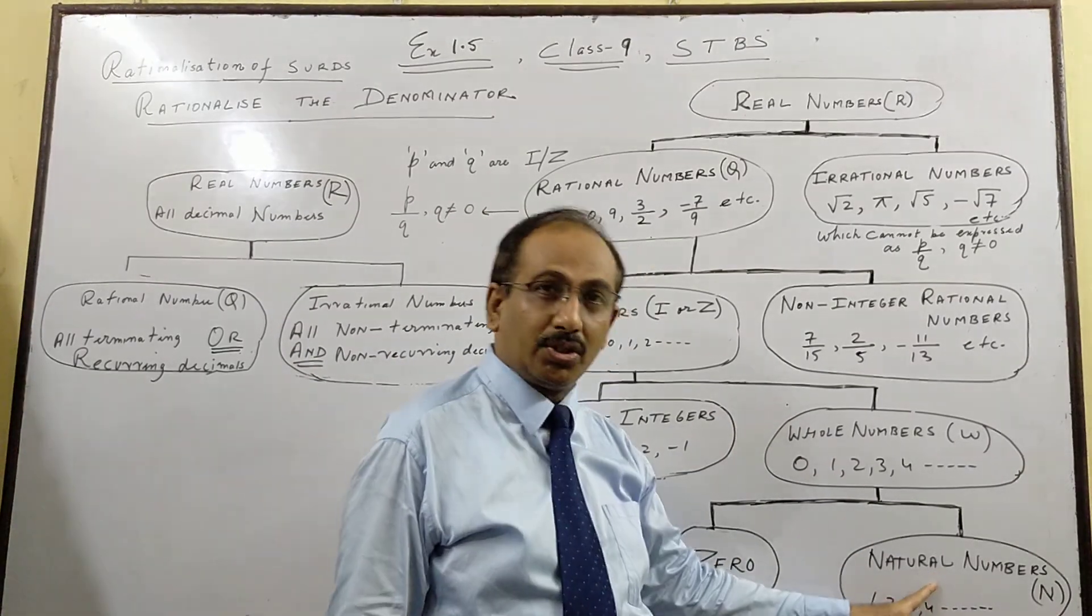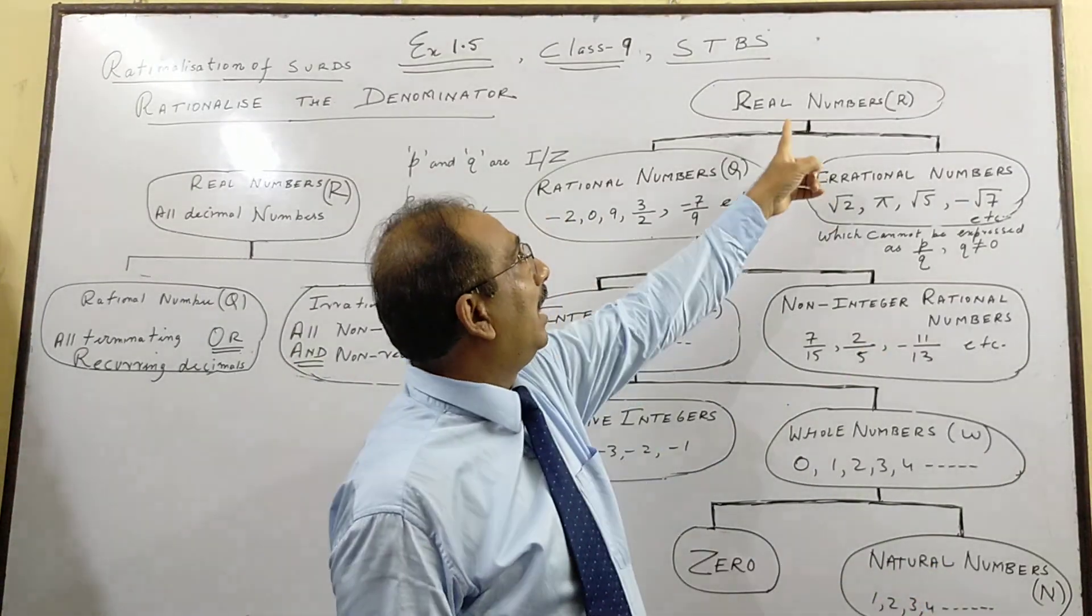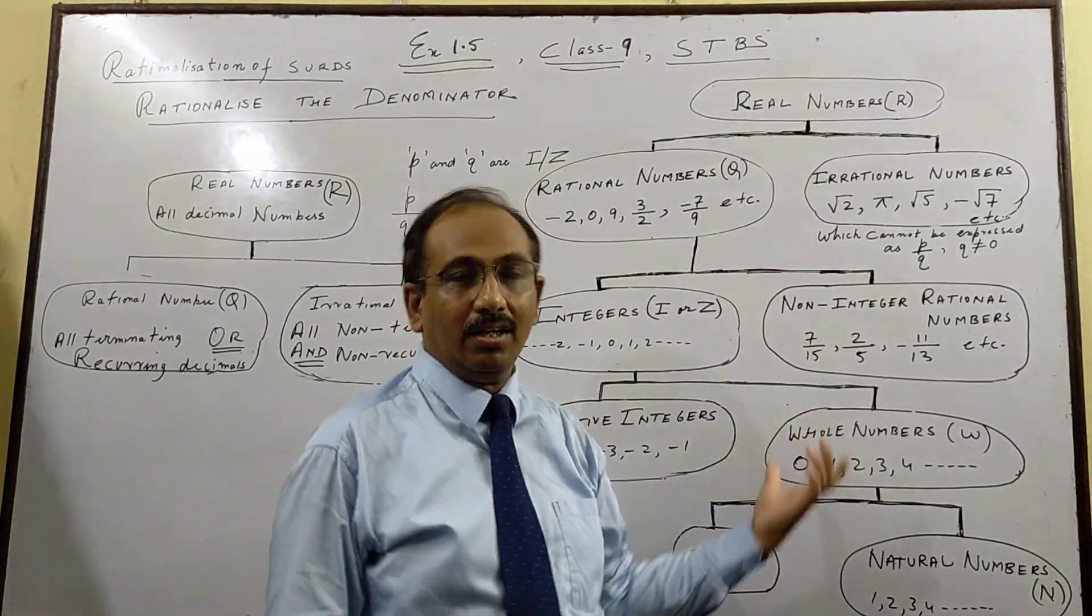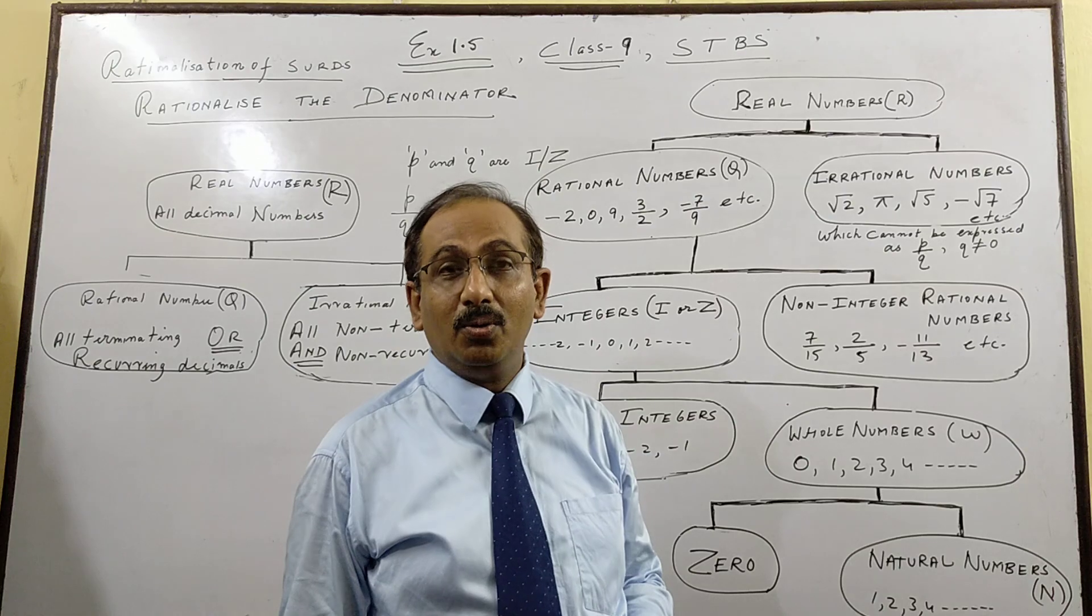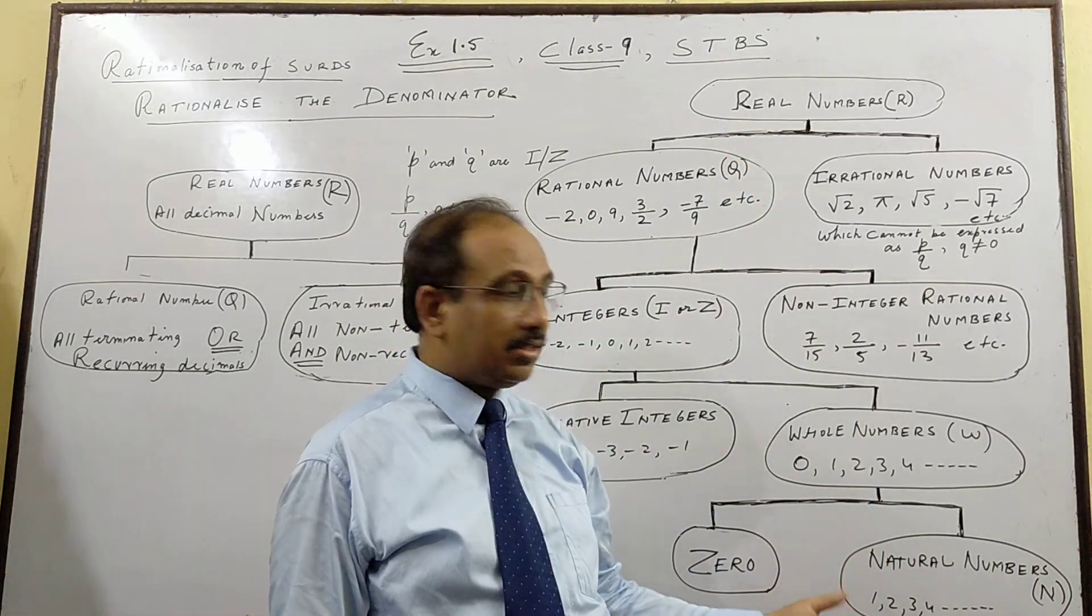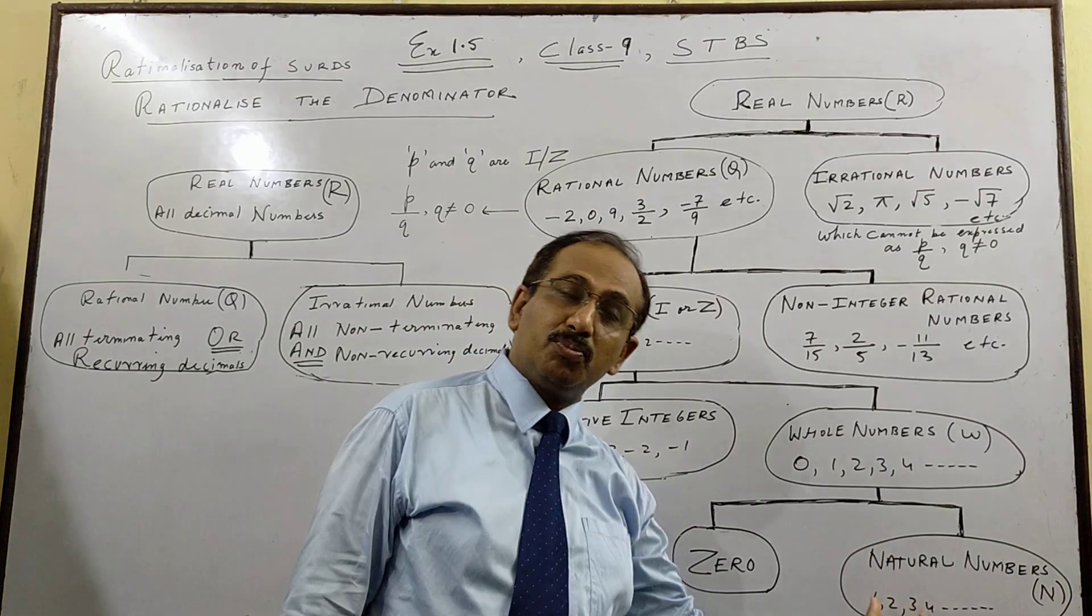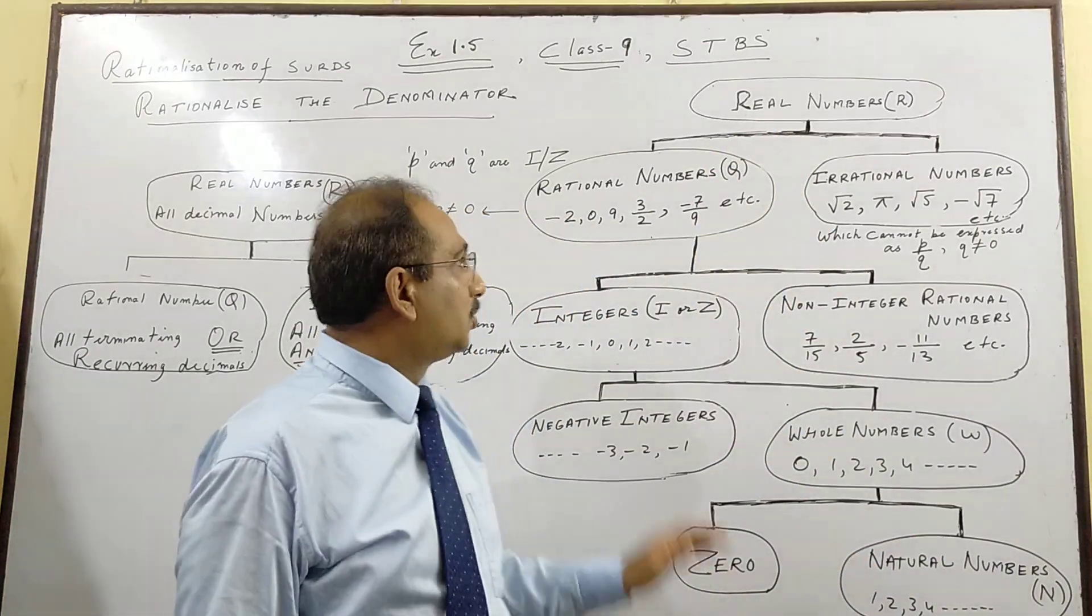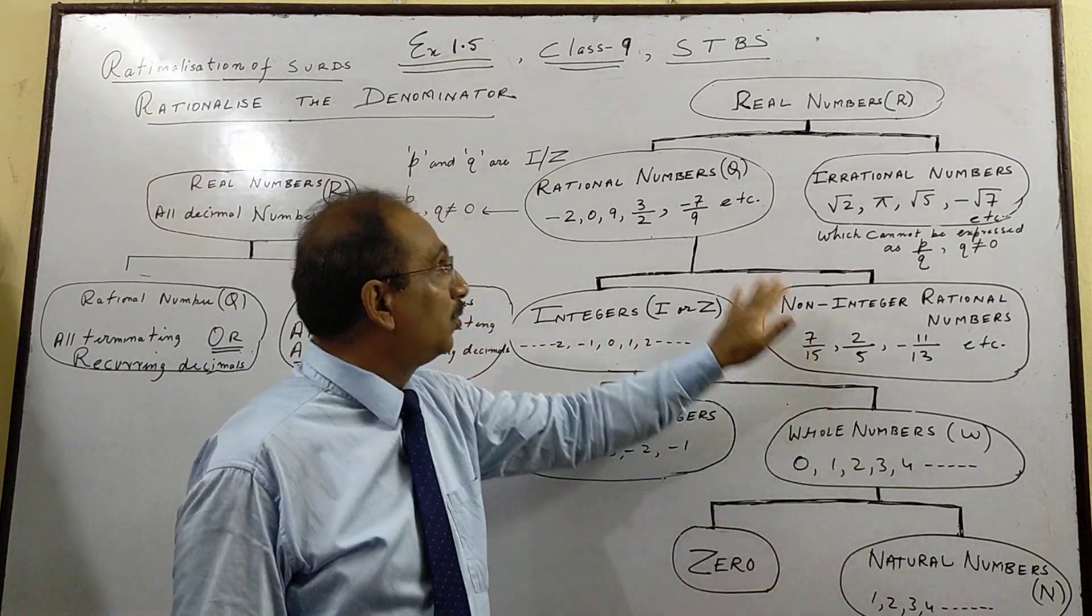One thing to start with, don't get confused with the word natural and word real. See in English language, natural and real are almost very close in meaning. But in maths, they are very much different. Natural number is a very small subset or a part of real number.